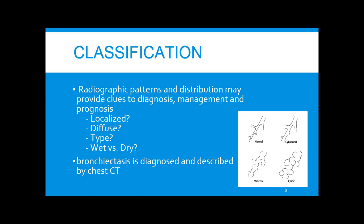For classification, the gold standard for diagnosis is a high-resolution CT scan. The diagnosis is made when the internal diameter of the bronchus is larger than the accompanying vessel, or when the bronchus fails to taper at the periphery. This can be localized in one segment or lobe, or it can also be diffuse. Classically they're described as normal, cylindrical, varicose, and cystic.